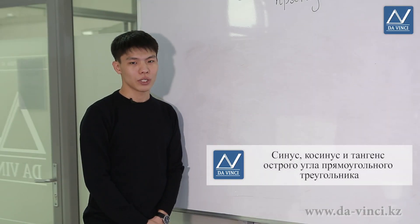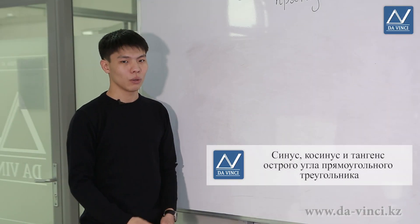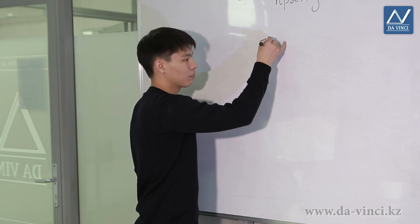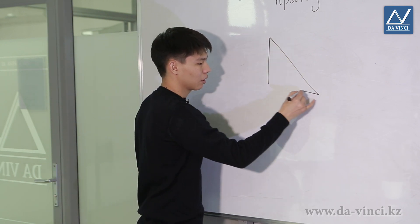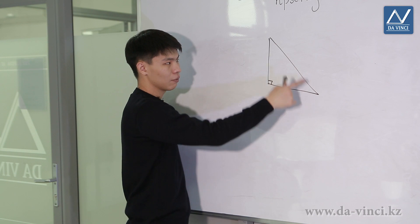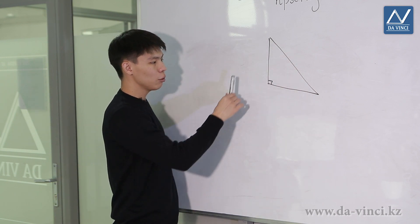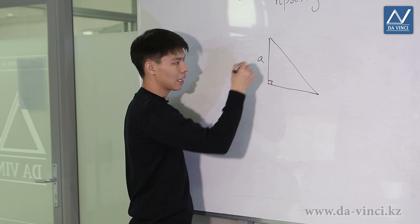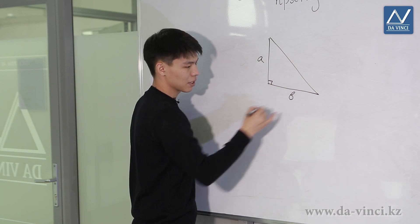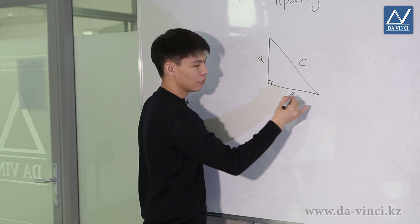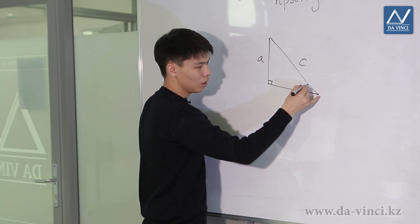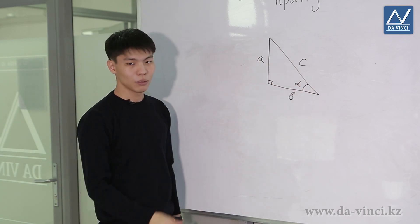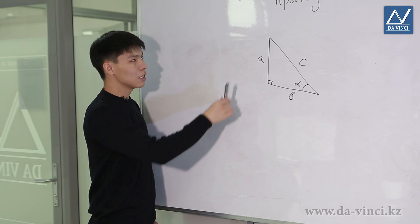The topic of this video lesson is sine, cosine and tangent of an acute angle of a right triangle. Let's consider some right triangle. We introduce the following designations for convenience: one leg will be denoted by A, the other leg will be denoted by B, the hypotenuse by C, and this acute angle will be denoted as alpha. It will be a little more convenient to work with such designations.